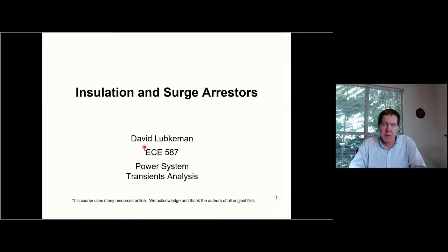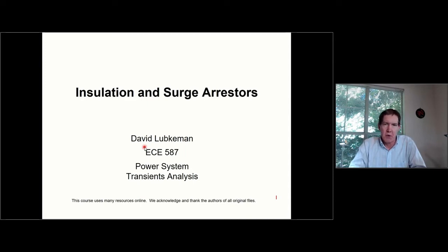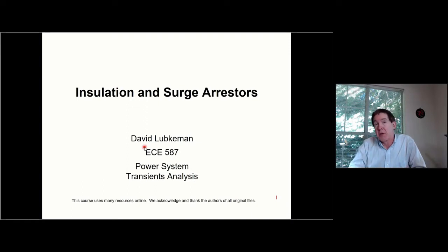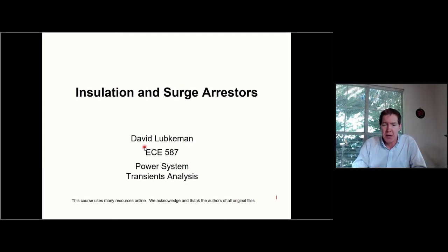We spent quite a bit of time this semester talking about how to do the modeling around transit overvoltages. What we're going to be discussing this lecture is insulation and surge arrestors. Given that we're going to have these overvoltages, are we going to have some type of an insulation failure? And what can we possibly do about it in terms of placing surge arrestors near the equipment that we want to be able to protect?